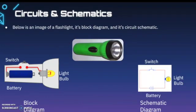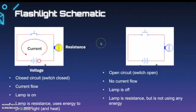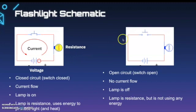On this slide, we're going to take a look at some circuits and schematics. Below you see an image of a flashlight, its block diagram, and its circuit schematic. On the left, we have a closed circuit indicated by the switch that is closed, and we can note that there is current flowing through the circuit — indicated by a star symbol — and the lamp is lit. The lamp acts as resistance within the circuit and uses energy to produce light and heat. On the right, we have an open circuit indicated by the switch not touching the rest of the circuit; there is no current flow, the lamp is off, and the lamp is resistance but not using any energy.